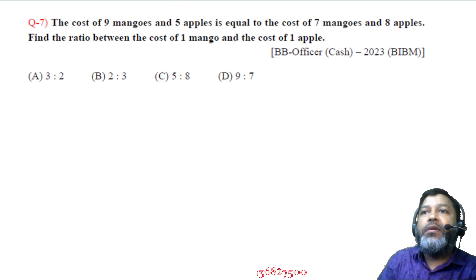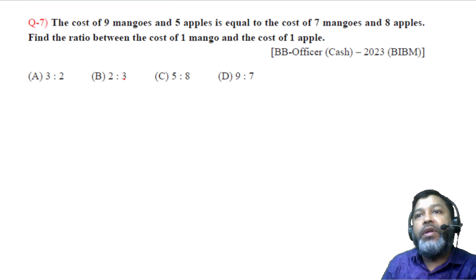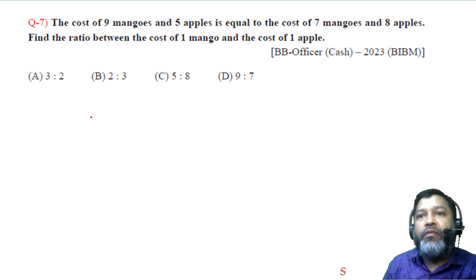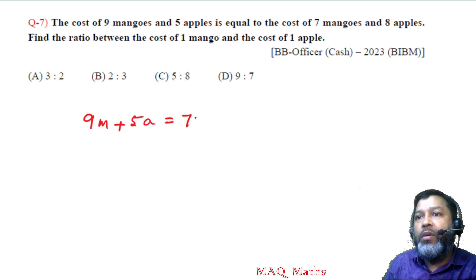Question number 7: The cost of 9 mangoes and 5 apples is equal to the cost of 7 mangoes and 8 apples. Find the ratio between the cost of 1 mango and the cost of 1 apple. Setting up: 9m plus 5a equals 7m plus 8a.